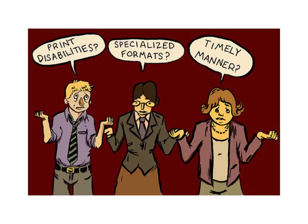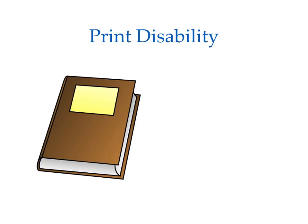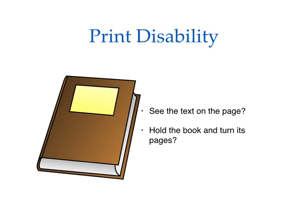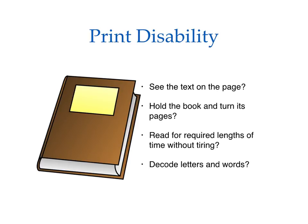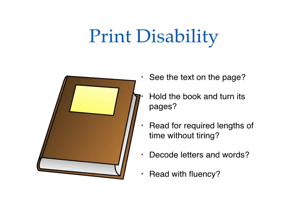Let's begin with print disability. Consider a standard print book. What are the abilities that a student needs to learn or gain information from this book? For example, can the student adequately see the text and other content on its pages, hold the book, and turn its pages? Does the student have the necessary physical stamina to read for required periods of time, such as sitting upright and staying alert? Can the student decode letters and words, and read with fluency? If the answer is no to one or more of these questions, the student may have a print disability and need the book in a specialized format.